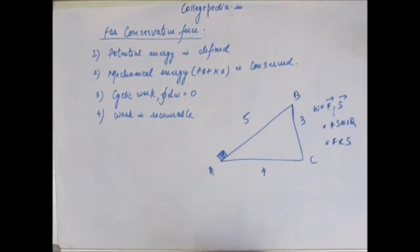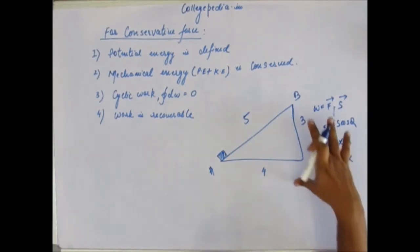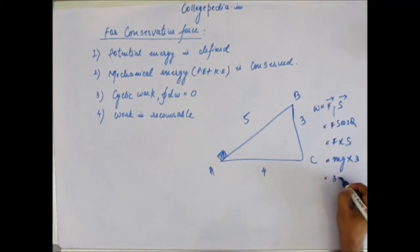So the force that you have to apply to move it slowly would be the same as the opposing force. Opposing force is mg. Opposing force is mg and displacement would be 3. So 3mg would be the amount of work that you have to do.